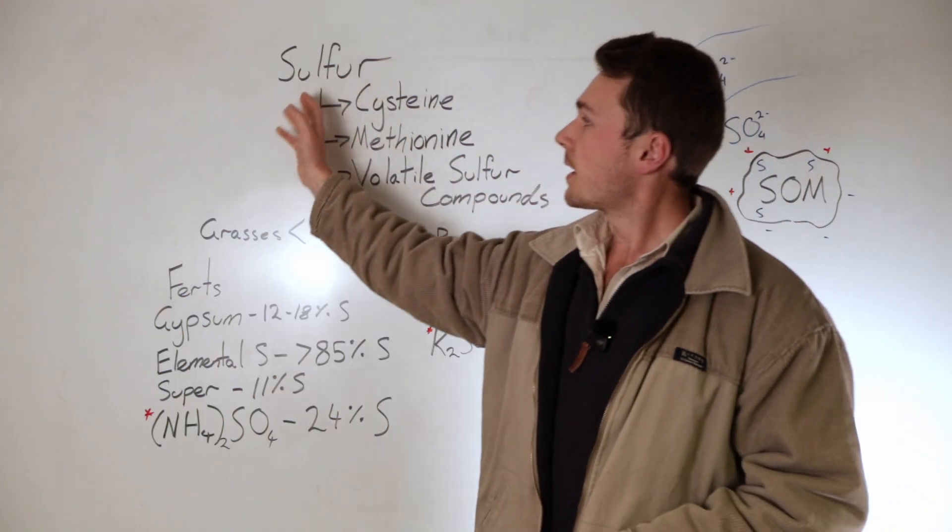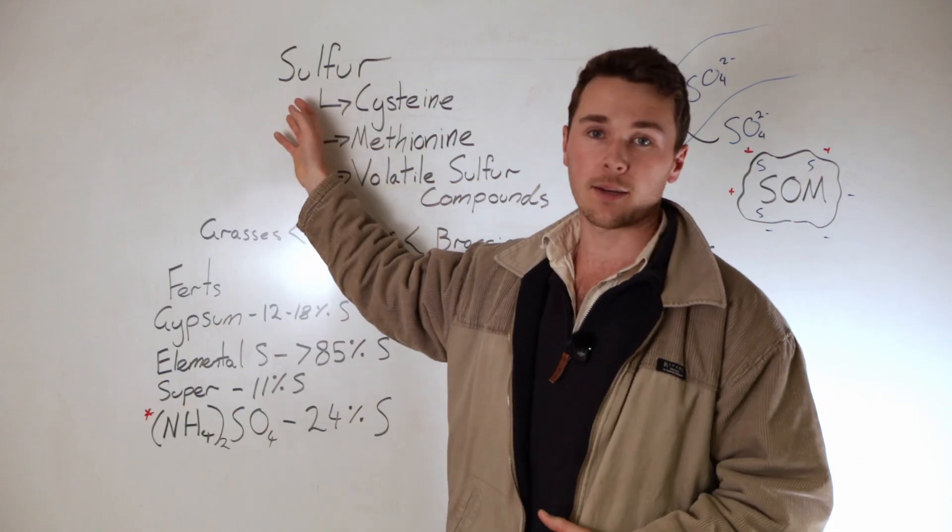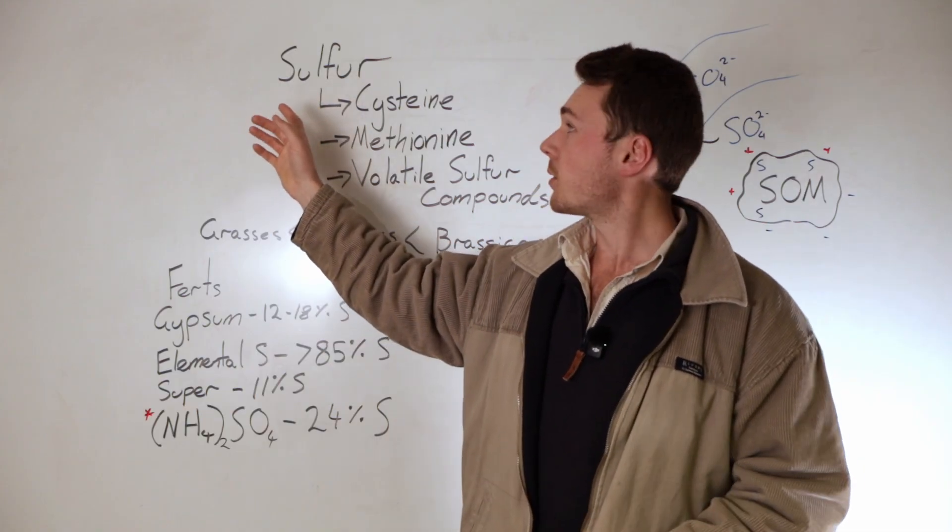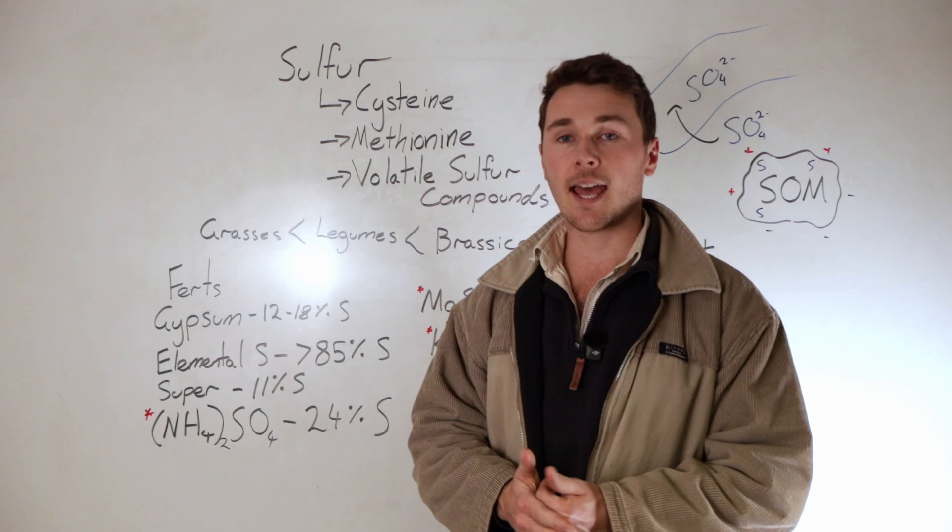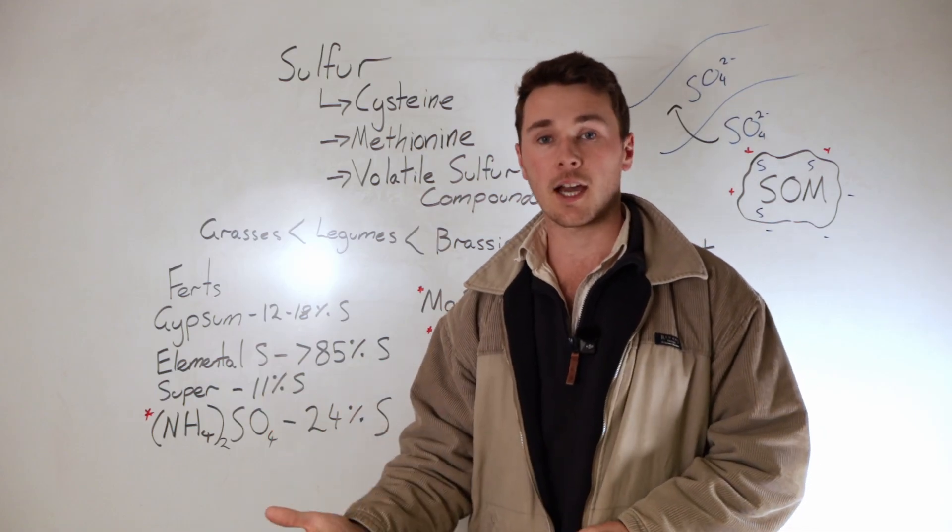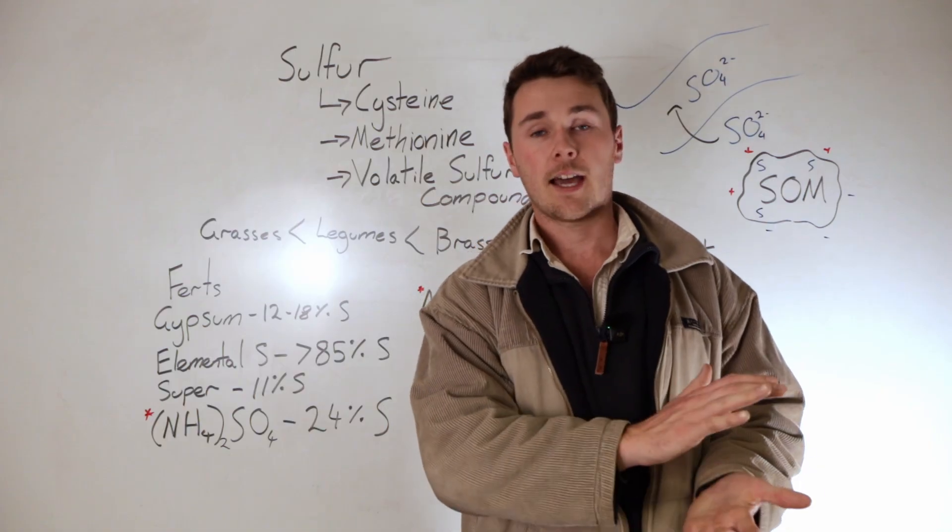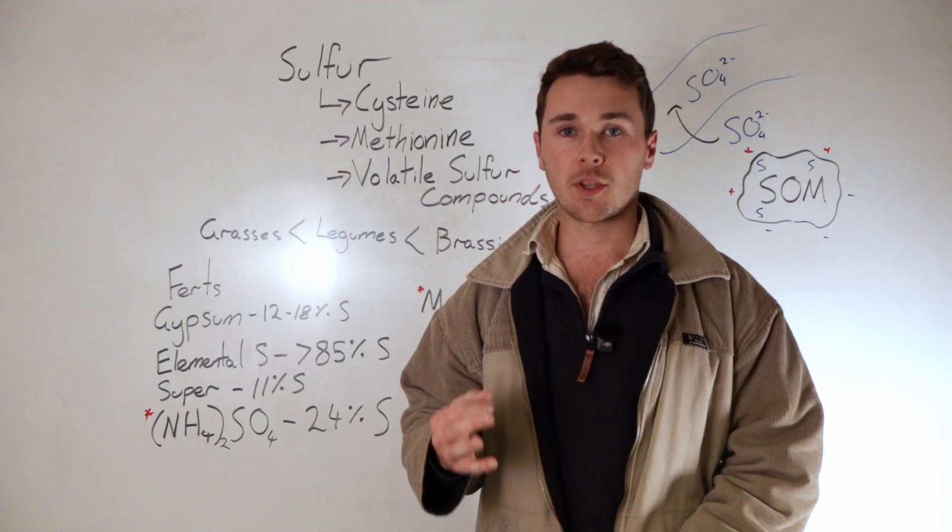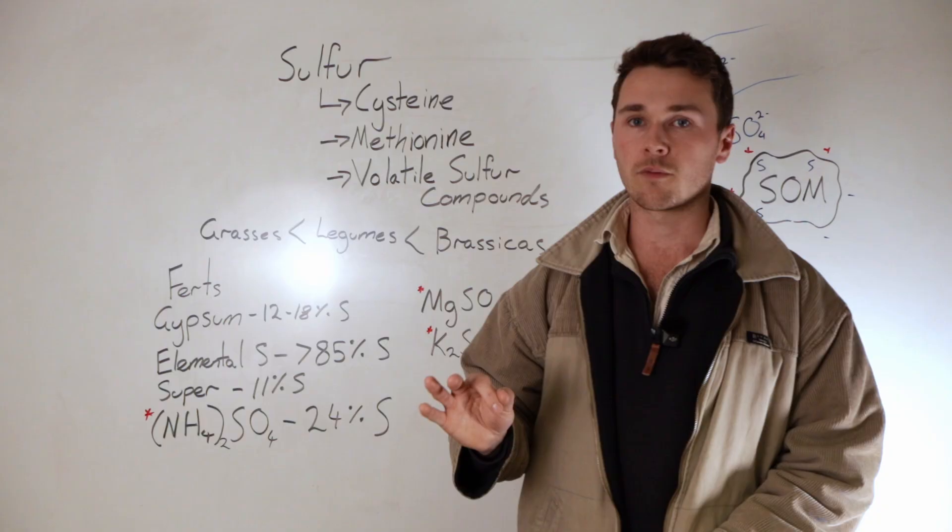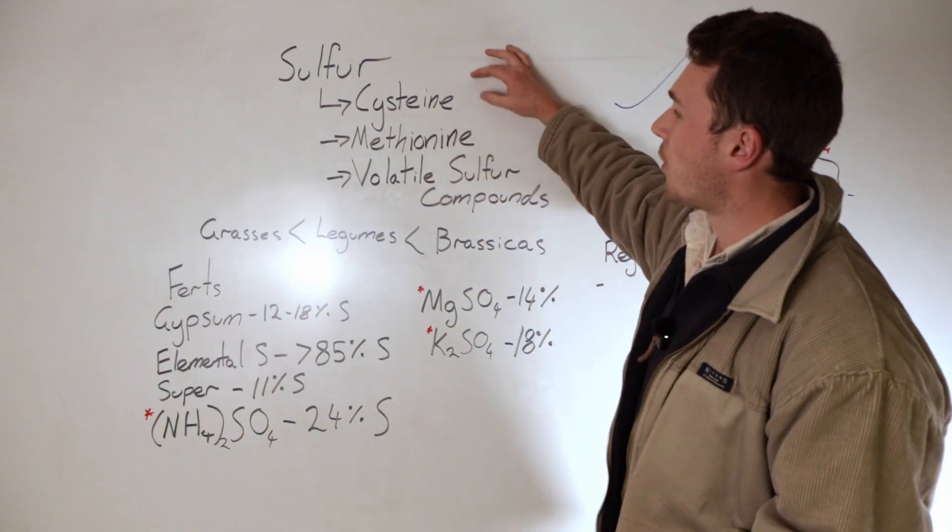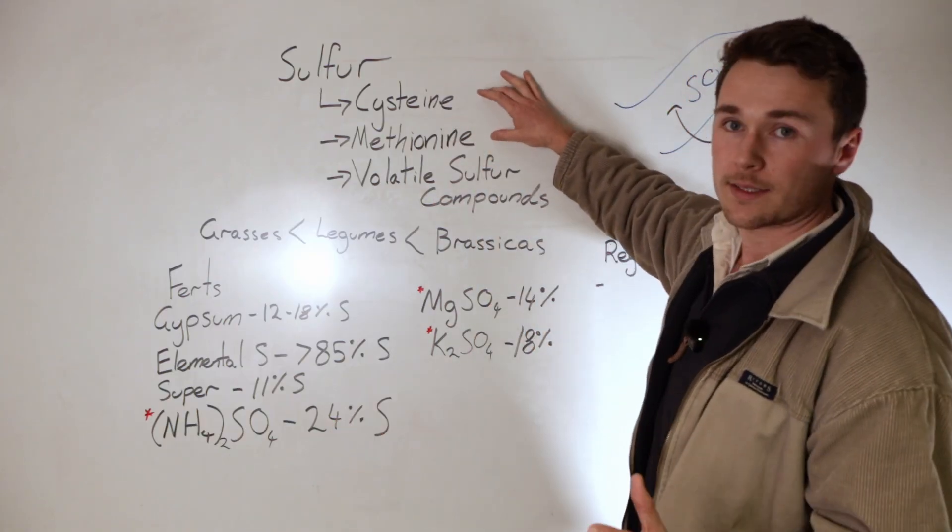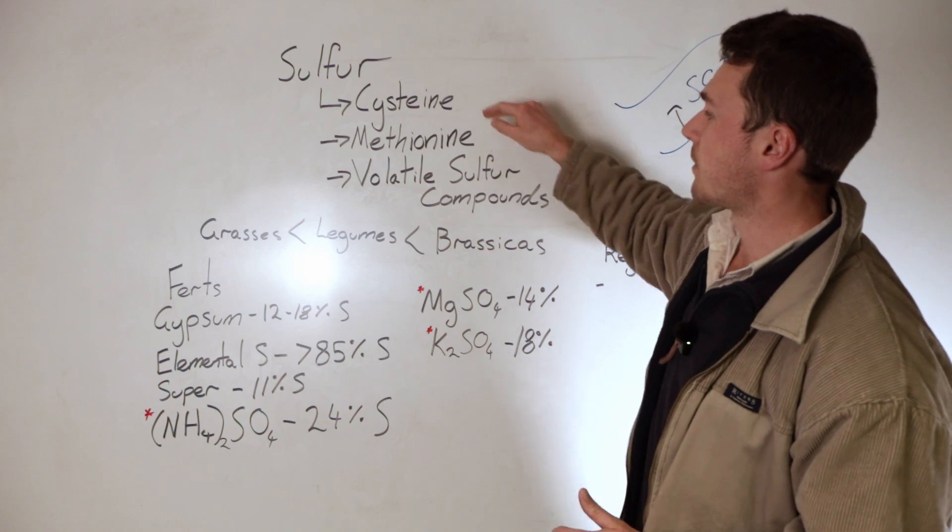Sulfur is pretty interesting and it's one of our last macronutrients we'll be talking about in this course. Sulfur's quite interesting because it's an anion which means it has a negative charge, and we'll talk about what that means in terms of our soil in just a moment. There's really three main functions of sulfur. The first one is the formation of two amino acids that contain sulfur: cysteine and methionine.